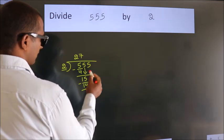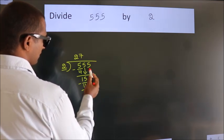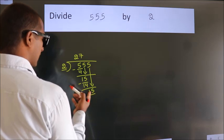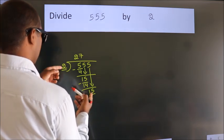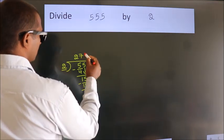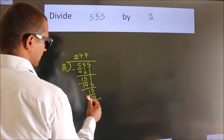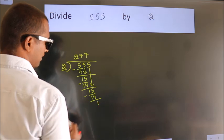After this, bring down the beside number. So 5 down, so 15. A number close to 15 in 2 table is 2 sevens, 14. Now we subtract. We get 1.